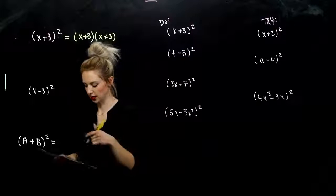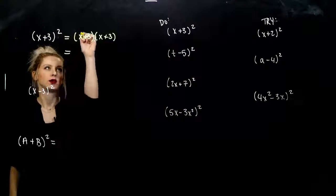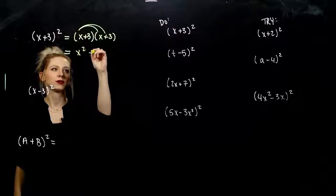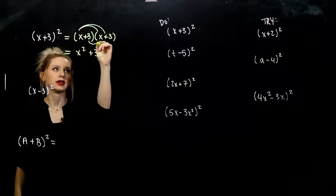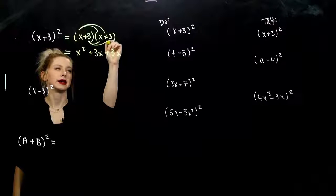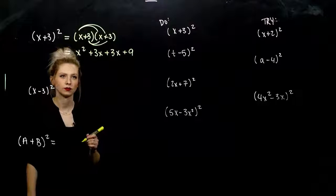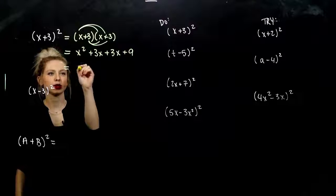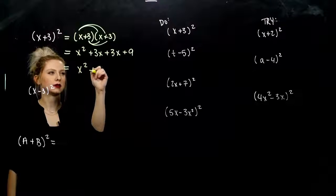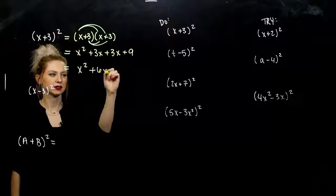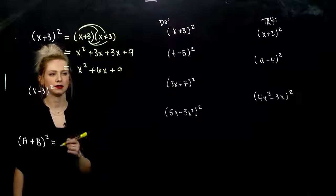As we FOIL this out, what are we looking at? First, I get X squared. Outer, 3X. Inner, 3X. And last, we get 9. As we combine our like terms, I get X squared plus two of each of these factors. So I've got six altogether and 9 on the end.